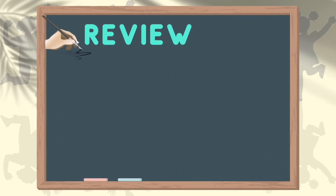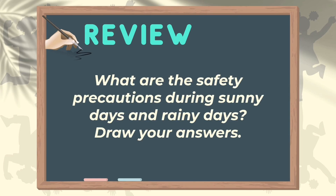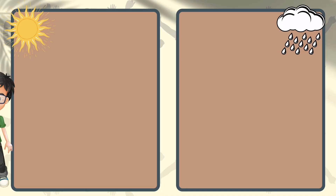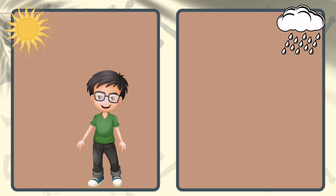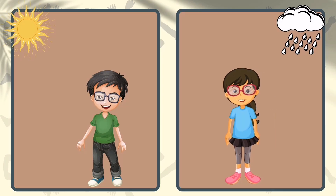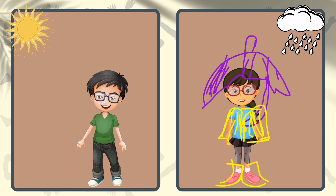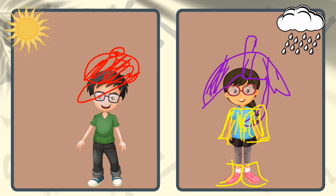Let's have first a short review. What are the safety precautions during sunny days and rainy days? Draw your answers. In the first picture, what should a boy do to protect himself from too much heat of the sun? In the second picture, what should a girl do to protect herself from the rain? Umbrellas can be used both during a sunny day and a rainy day. During rainy or cold days, you can wear a jacket or a sweater. You can also wear a hat, sunglasses, and protective clothing to protect yourself from too much heat from the sun.